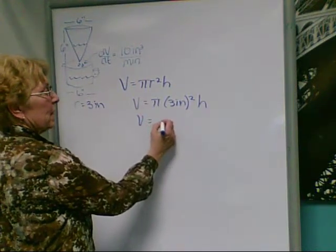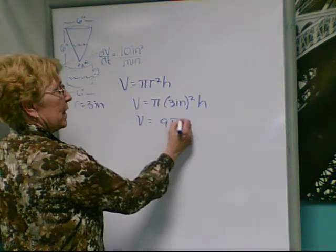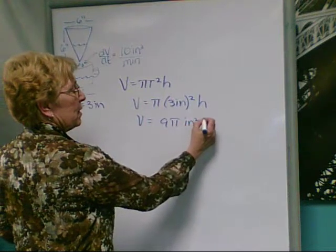Simplifying a bit, we're going to get 9 pi inches squared times height.